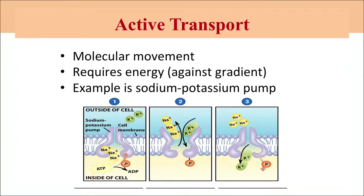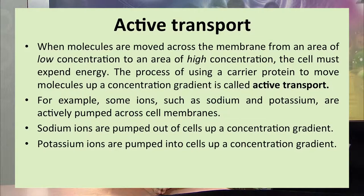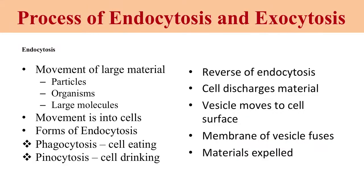The next type of movement is active transport. In active transport, molecules may move from low concentration to higher concentration — against the gradient — so energy must be expended. The process of using a carrier protein to move molecules up a concentration gradient is called active transport. An example is the sodium-potassium pump: sodium ions are actively pumped out of the cell up a concentration gradient, and potassium ions are pumped into the cell up a concentration gradient.